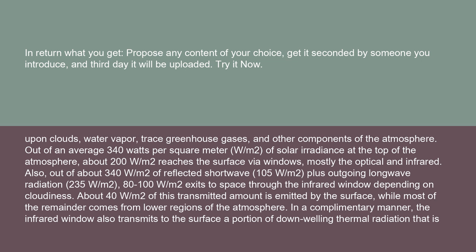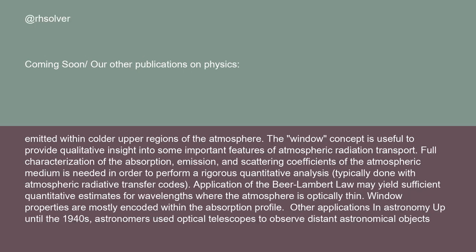About 40 W/m² of this transmitted amount is emitted by the surface, while most of the remainder comes from lower regions of the atmosphere. In a complementary manner, the infrared window also transmits to the surface a portion of downwelling thermal radiation emitted within colder upper regions of the atmosphere. The window concept is useful to provide qualitative insight into some important features of atmospheric radiation transport.